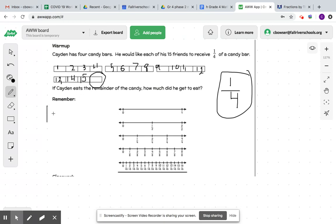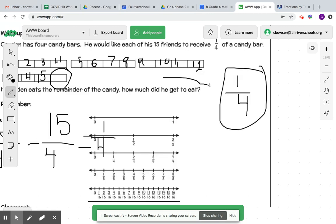So we're really doing 16 fourths and we're taking away 15 fourths because that's how much all of his friends get. So there's 15 fourths. And we said 16 fourths minus 15 fourths was equal to one-fourth. So if you got one-fourth, you are correct.